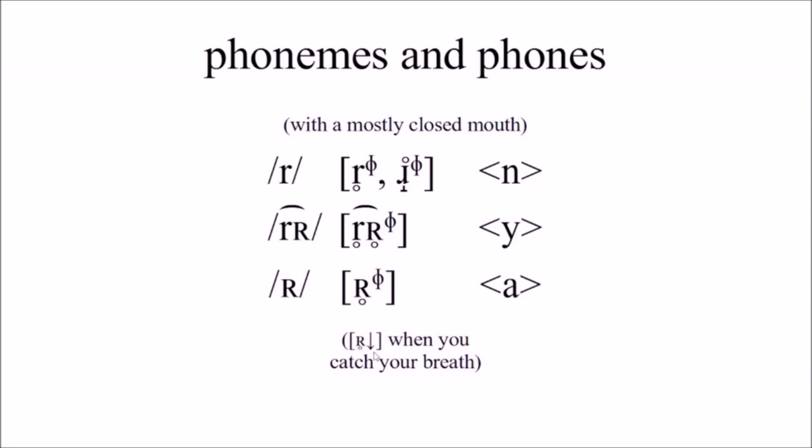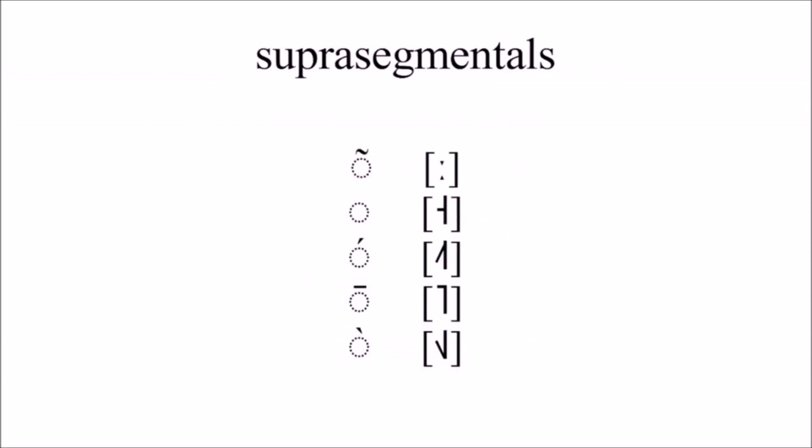You can also do where you catch your breath. There are five suprasegmentals, which are length, so there is a distinction. There's the metal tone that is not indicated. There's the rising tone, the high tone, and the falling tone.